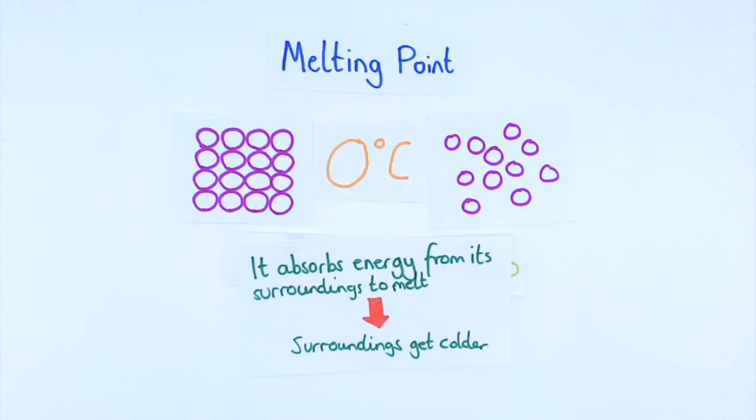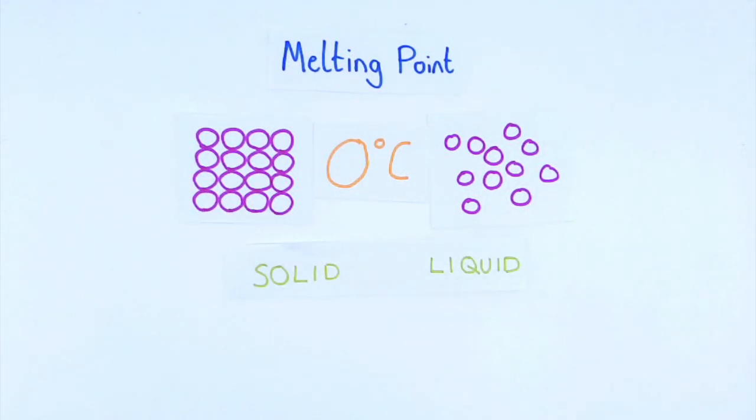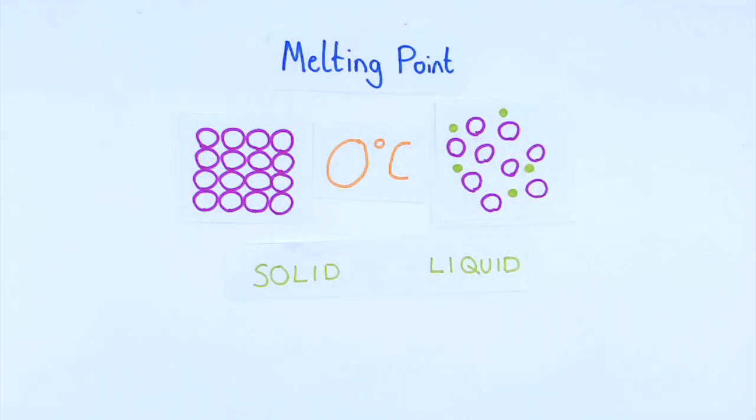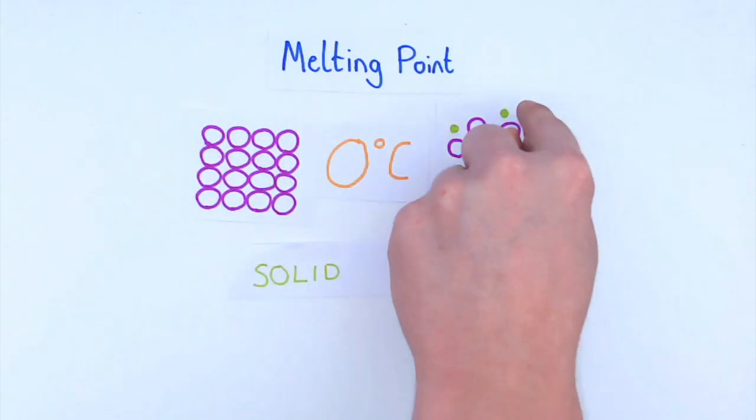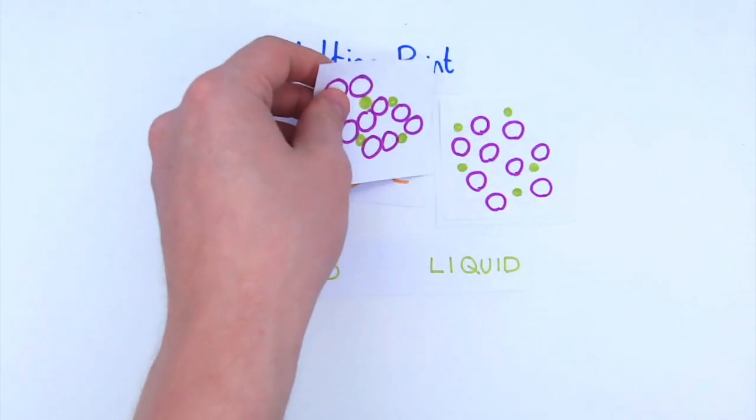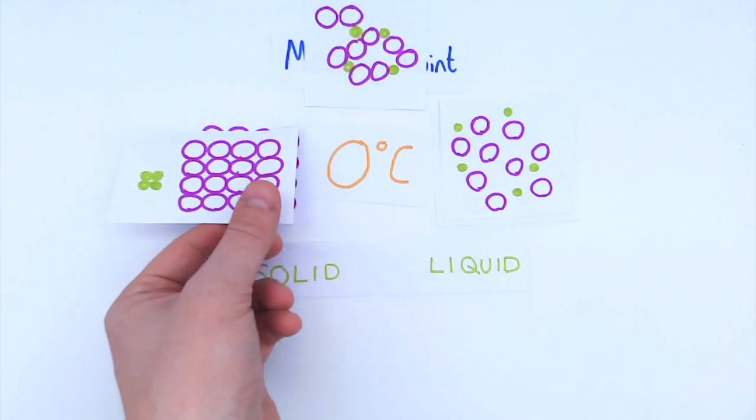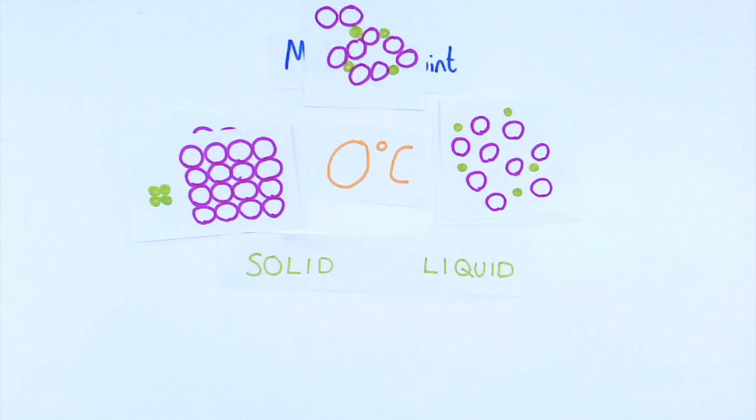Well there's actually two reasons for this. The first thing is if I go back to the liquid, this is what the liquid looks like in salt water. And you can see that actually it's going to be quite difficult to turn it into solid because I've got these salt particles in the way and they kind of muck it up. They kind of get in the way and that means that it takes more energy for that to happen.